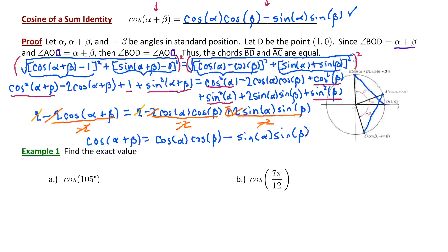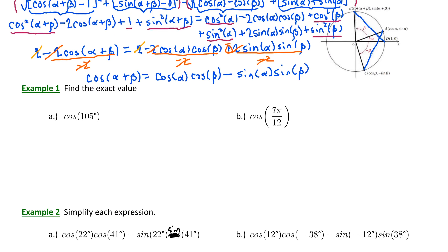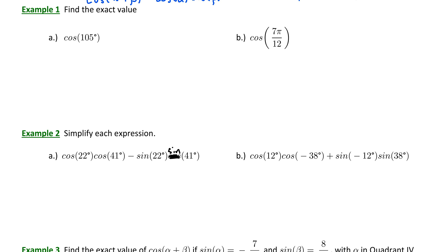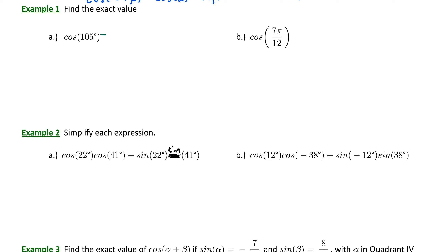Now let's practice applying this identity. Example 1 says find the exact value. For part A, we're going to evaluate cosine of 105 degrees. Notice that 105 degrees is not one of our common unit circle angles. However, we could express 105 degrees as a sum of two unit circle angles — for example, 60 degrees plus 45 degrees. Since we're dealing with cosine of a sum, we can expand it according to the formula.